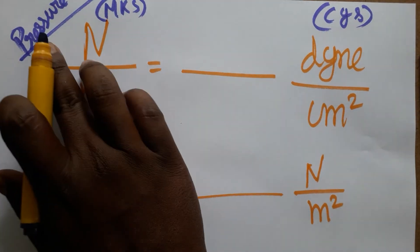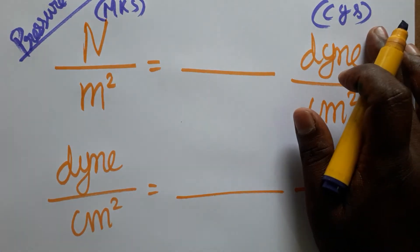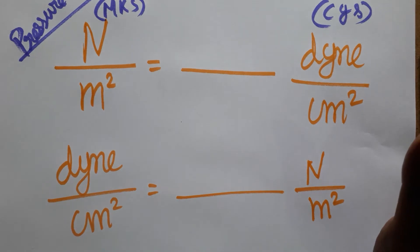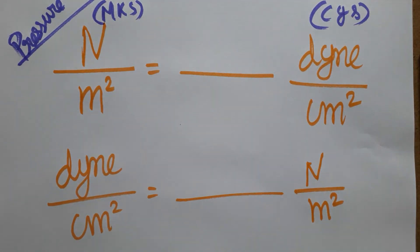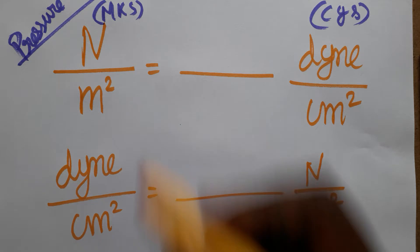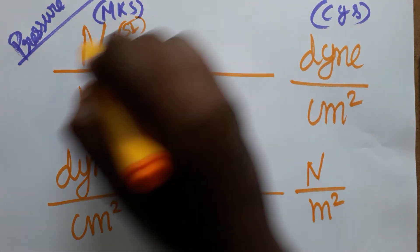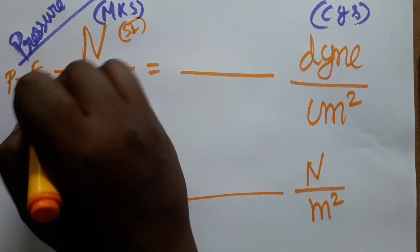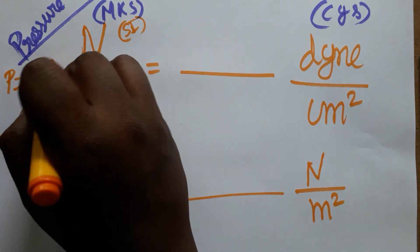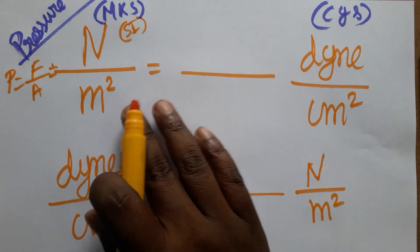Today we are going to learn how to convert the pressure unit from MKS system to CGS system. MKS system — the other term we can call it — is the SI system, system of international. The pressure unit: pressure is equal to force per unit area. Force unit is a Newton, area unit is meter square.